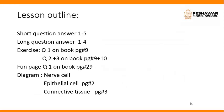Now turn your page and write the lesson outline. There are 5 short question answers, 4 long question answers, and exercise questions number 1, 2, and 3. These exercises should be done on your book, but short and long question answers you will write in your copy. Then fun pages on book, page number 29. And then we will draw the diagram: nerve cell, epithelial cell, and connective tissue. These diagrams must be on your copy.